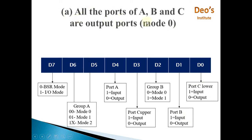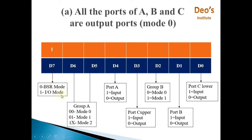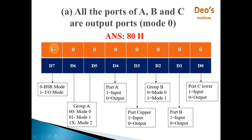In this problem we have to set all ports A, B, and C as output ports. D7 must be one because it is I/O mode. Group A will work in mode 0, so D6 and D5 are both zero. Port A is output so D4 is zero. Port C upper is output so D3 is zero. Group B is mode 0, port B is output, and port C lower is output. So the control word register value is 1000 0000, and the final answer is 0x80.